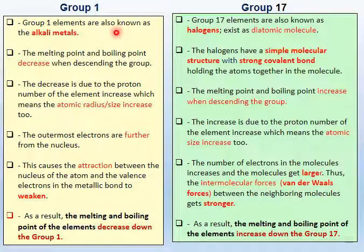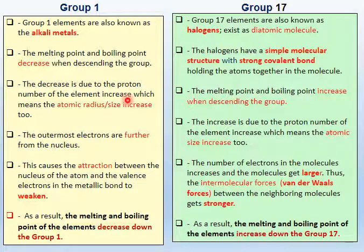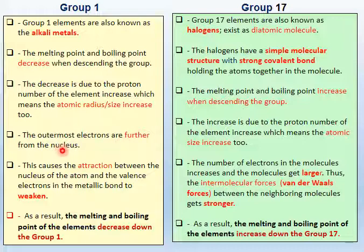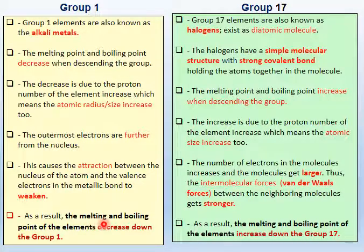For group 1, also known as alkali metals, the melting point and boiling point decrease when descending the group. This is due to the increasing proton number — the atomic size increases. When going down the group, the number of shells and the principal quantum number increase, and the shielding effect increases. The outermost electrons are further from the nucleus, causing the attraction between the nucleus and the valence electron of the metallic bond to weaken. As a result, the melting point and boiling point of the elements decrease down the group.